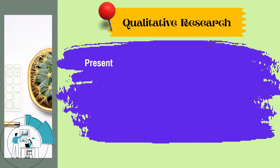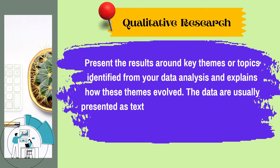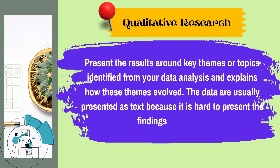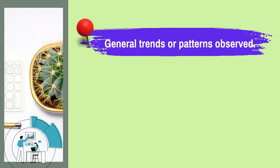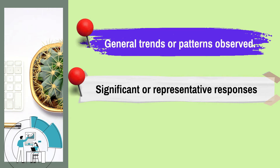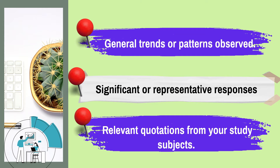Now we're going to discuss qualitative research and how to organize or present the result. Present the results around key themes or topics identified from your data analysis, and explain how these themes evolved. The data are usually presented as text because it is hard to present the findings as figures. For each theme presented, describe the general trends or patterns observed, significant or representative responses, and relevant quotations from your study subjects.